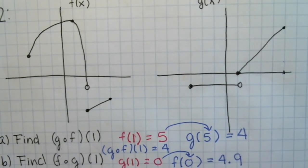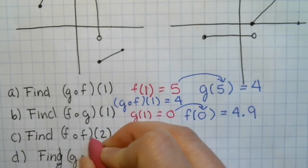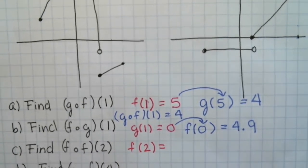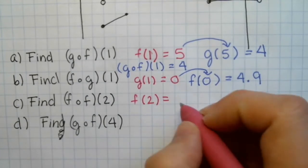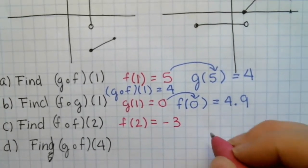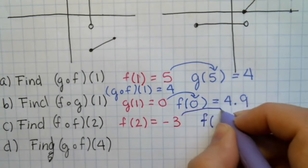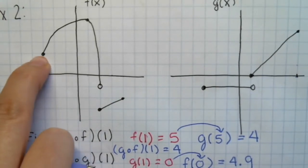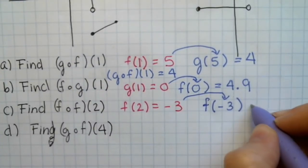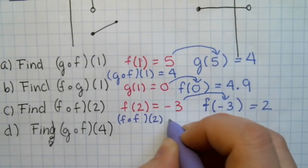F of 0, looking at the graph, is at approximately 4.9. So f composed with g of 1 equals 4.9. Next, we compose f with itself: f composed with f of 2. First we find f of 2, which is at negative 3. Then we plug negative 3 into f again: f of negative 3 gives a y value of 2. So f composed with f of 2 equals 2.